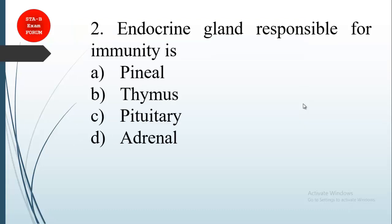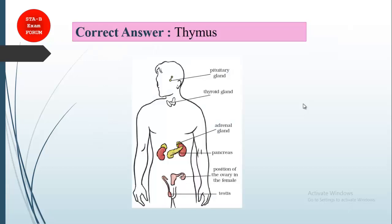Coming to the next question, this is from biology. Which endocrine gland is responsible for immunity? Let's see one by one. Option D, adrenal, is found on the kidneys and generates stress hormones. Pituitary is a growth hormone. So the correct answer is option B, thymus.